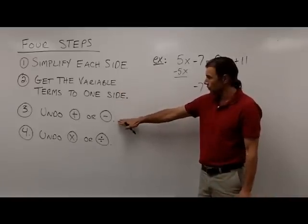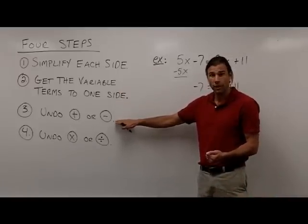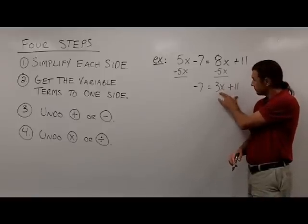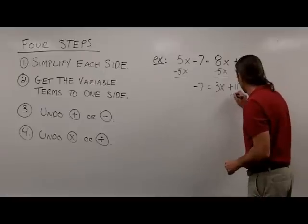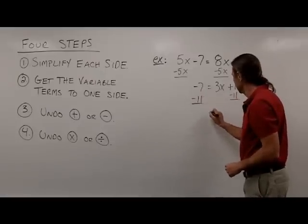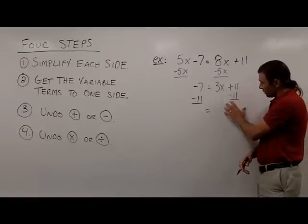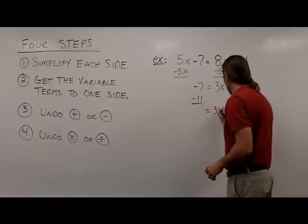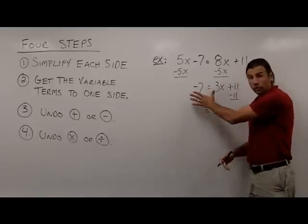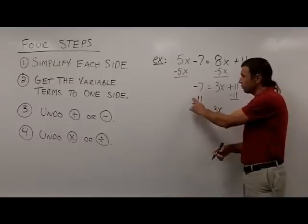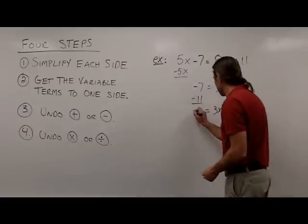Now I want to move on to step 3, which is to undo addition or subtraction on the variable side. My variable side is now the right side, and I have some addition on that side, so I want to get rid of this addition of 11 by subtracting it. So 11 minus 11 gives me 0, and all I have left on the right side is the 3x. On the left side, I have negative 7 minus 11 — or negative 7 plus negative 11 — which gives me negative 18.